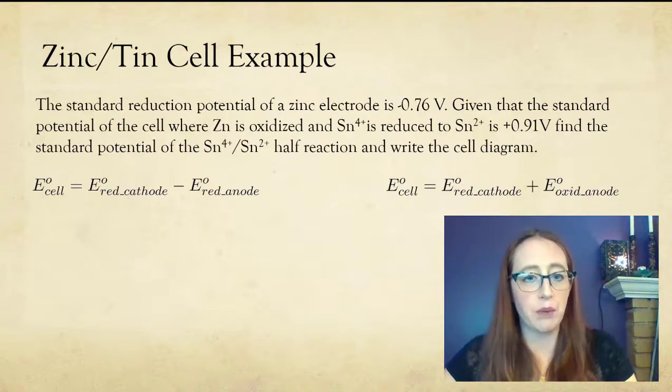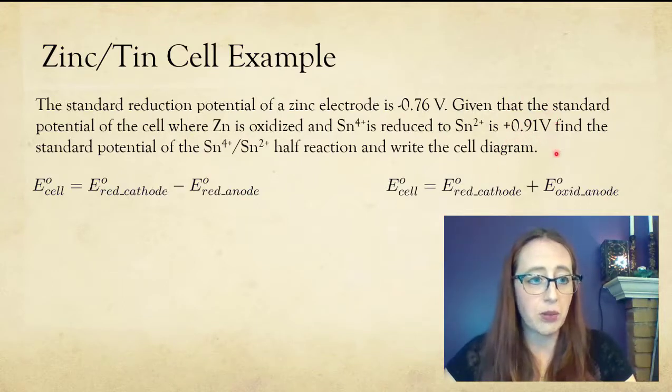So our first step is to fill in what we know. We know that the total cell voltage is 0.91V. And then we're told what the zinc electrode is. So we can fill that in.